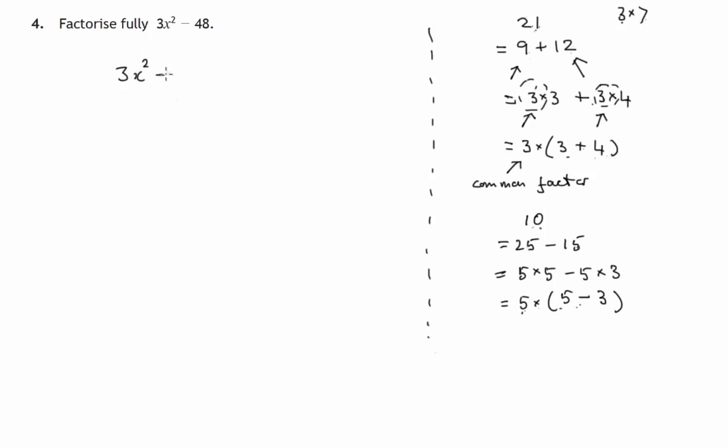In this case, we look at 3x² minus 48 and think there's 3 times x² and there's 3 times 16. There's a common factor of 3 in each of these two terms, so it can come outside the brackets and we're left with x² minus 16.